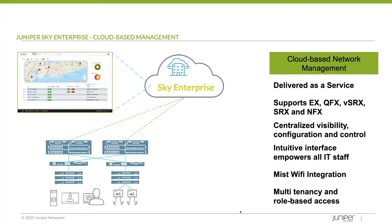What is Juniper Sky Enterprise? It's cloud-based management delivered as a service. It supports both old legacy and current model EXs, QFXs, VSRXs, SRXs, and NFXs — things like EX 4200s or 4300s, older SRX 200 series, 100 series, or the current 300, 345, 380s, whatever models you may have. It provides centralized visibility, configuration, and control with an intuitive interface. It empowers all IT staff with Wi-Fi integration of MIST and also of the MPIM card for the SRX, providing configuration visibility of the MPIM slot. Multi-tenancy and role-based access is included. One device, one license.